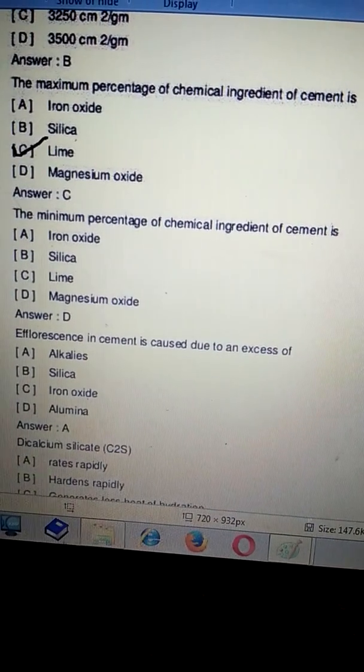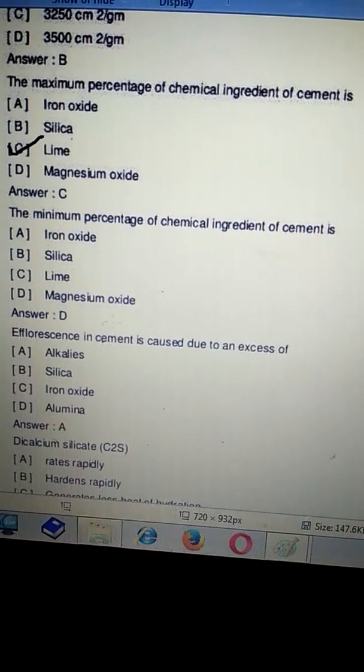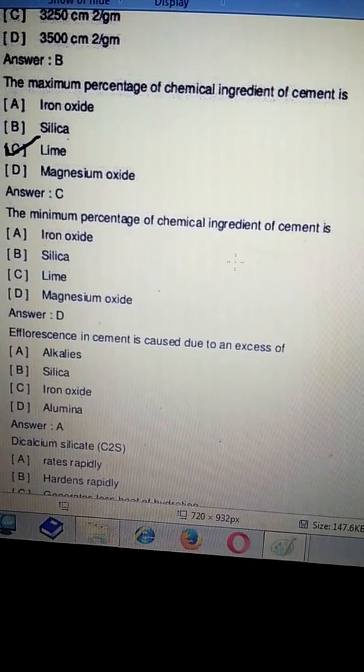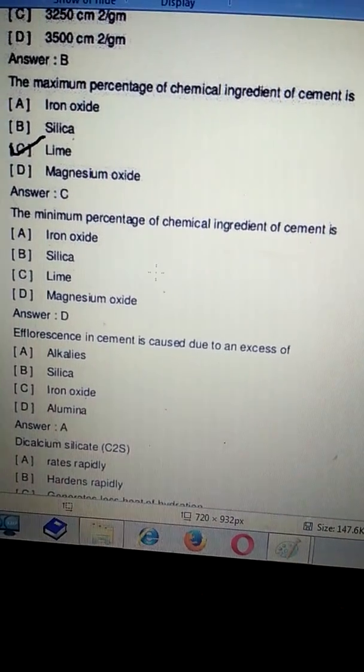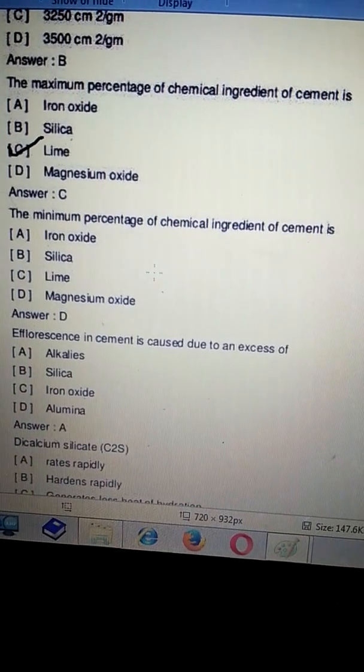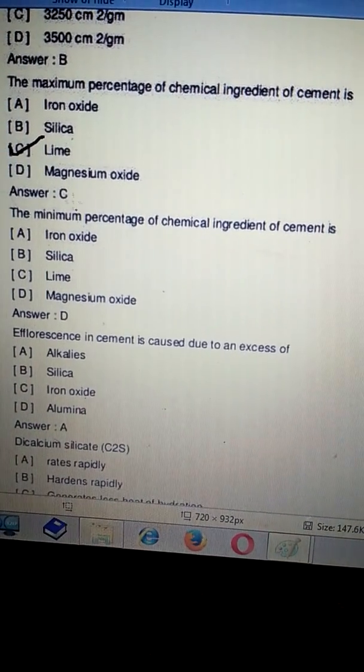The minimum percentage of chemical ingredients of cement is magnesium oxide and lime.